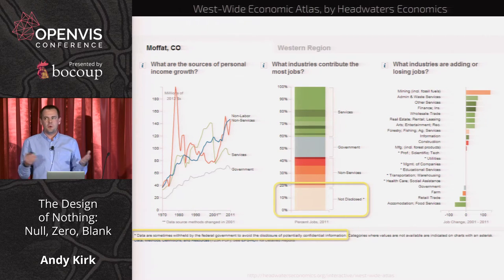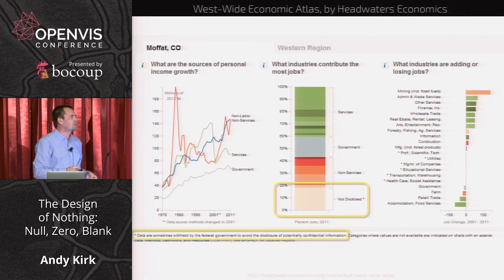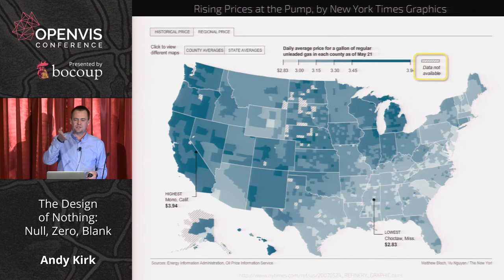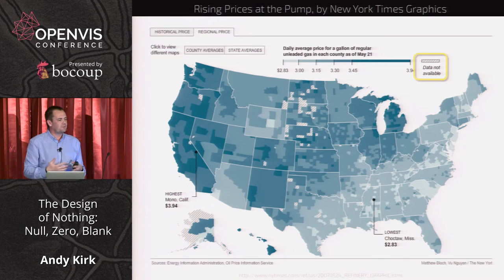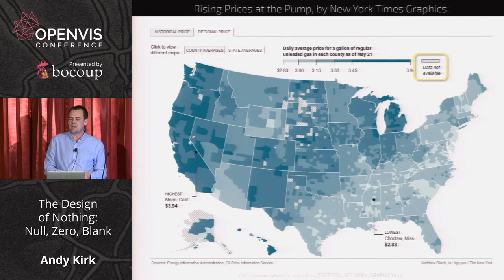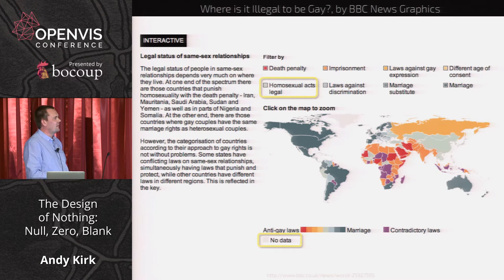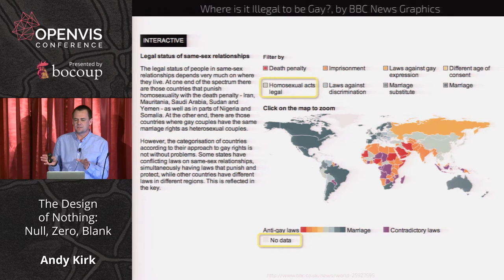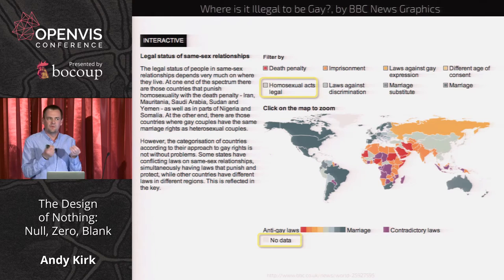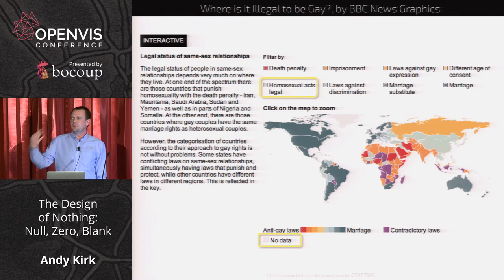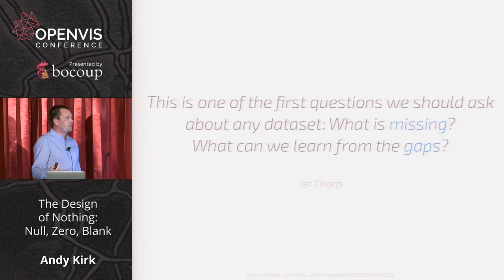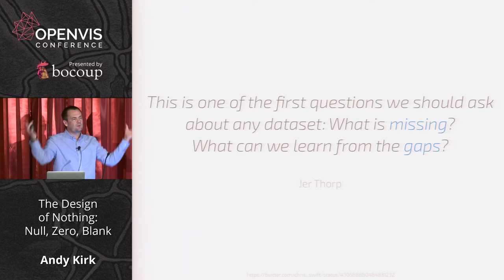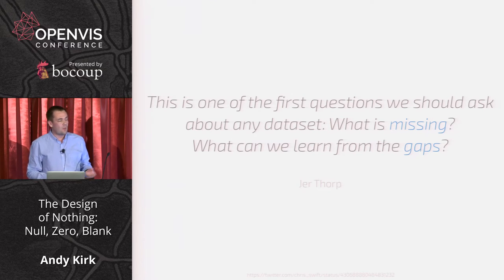The techniques of showing and representing no data can be tricky. One project uses a soft pastel colour; a New York Times project uses a texture hashtag to give equal emphasis to 'data not available' as to the colour shading of the choropleth map. But sometimes this doesn't work — a BBC attempt to show where it's legal to be gay used very similar shades of grey for 'no data' and 'homosexual acts are legal,' making it impossible to distinguish important categories. When it comes to nulls, one of the first questions we should ask about any data set is: what's missing? What can we learn from the gaps?